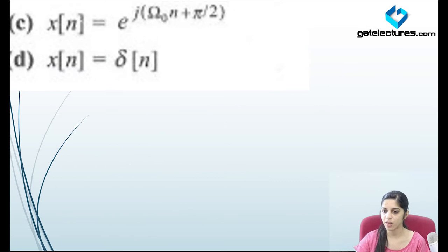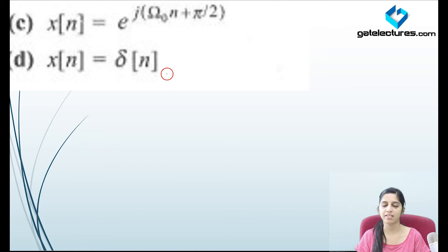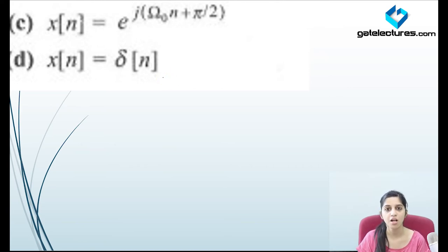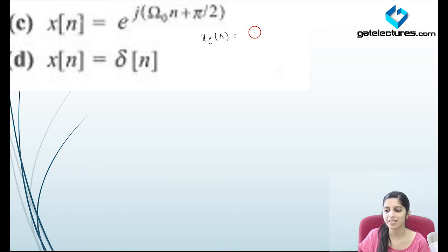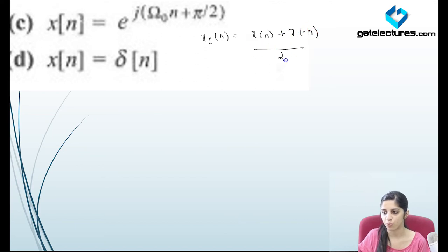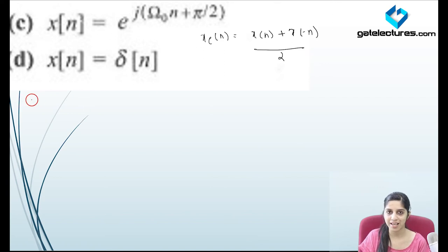Now we have a discrete time signal. Even if you are dealing with a discrete time or continuous time signal, the procedure to find even and odd parts remains the same. The even part of a discrete time signal is [x(n) plus x(minus n)] divided by 2, and similarly for the odd part.